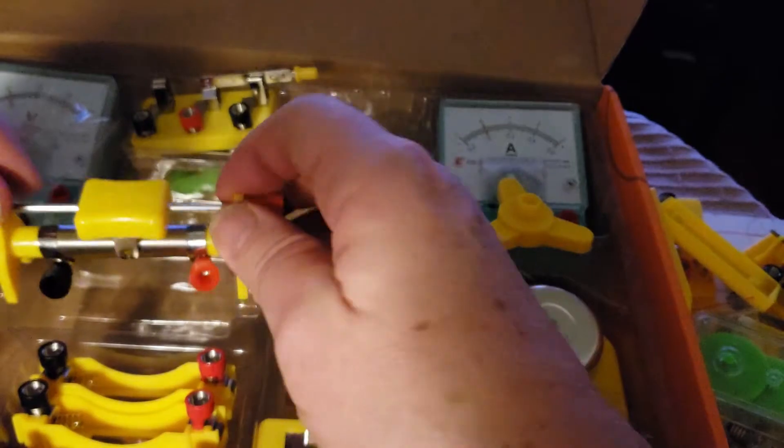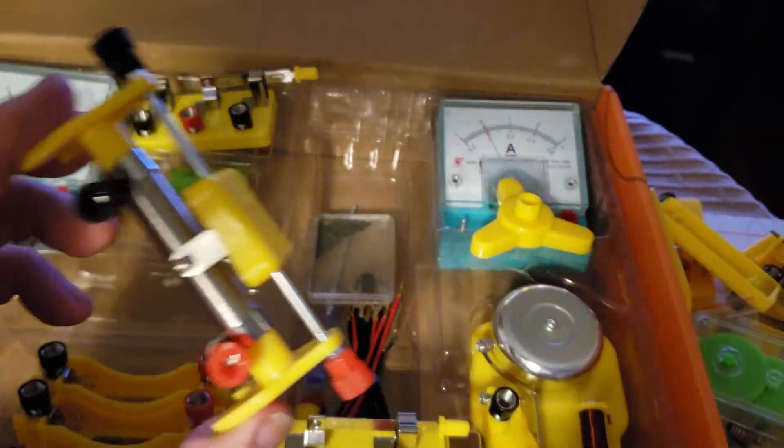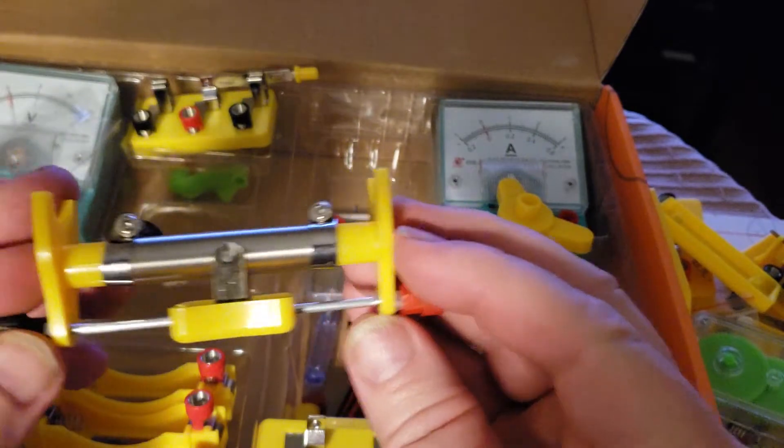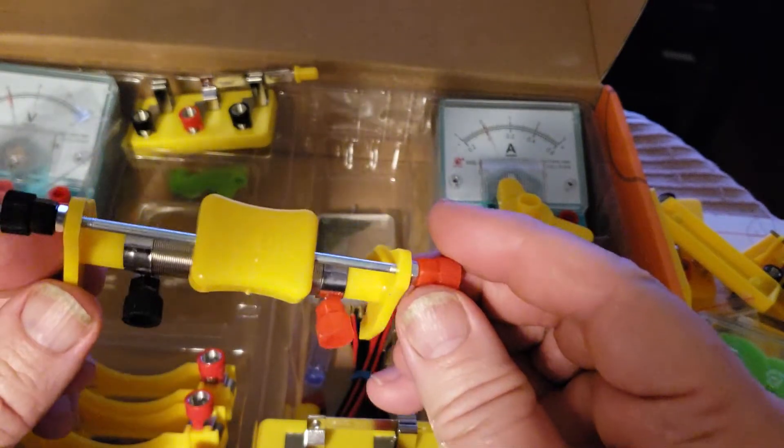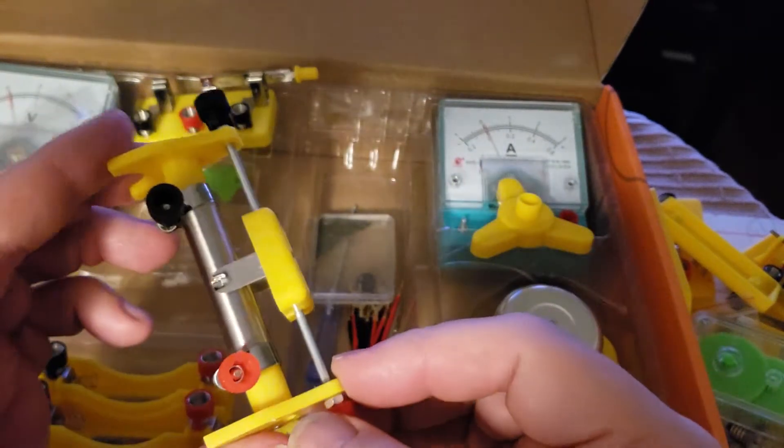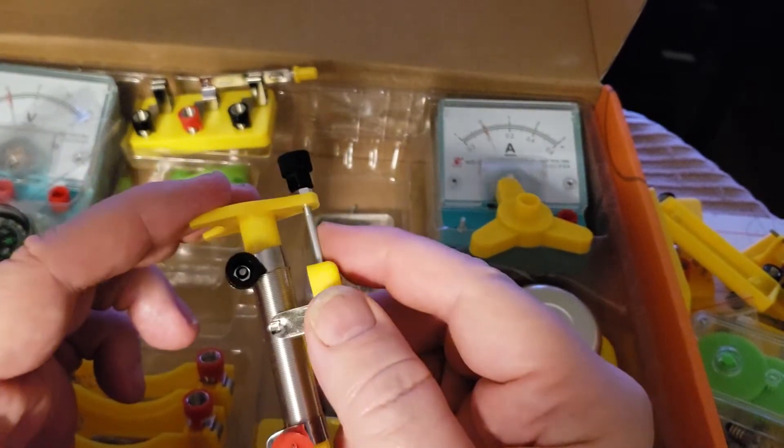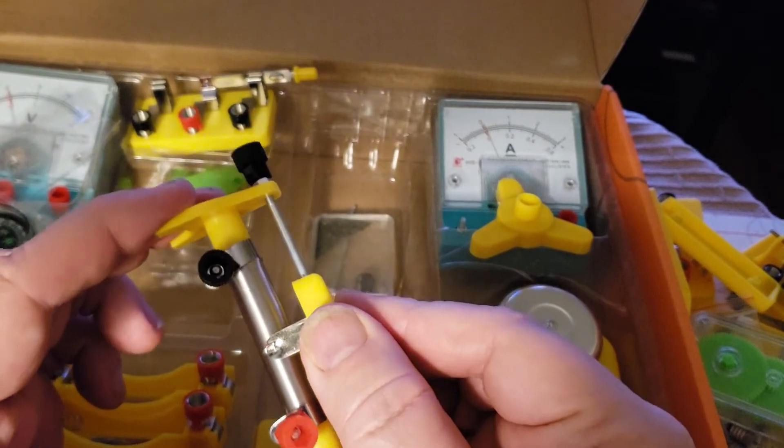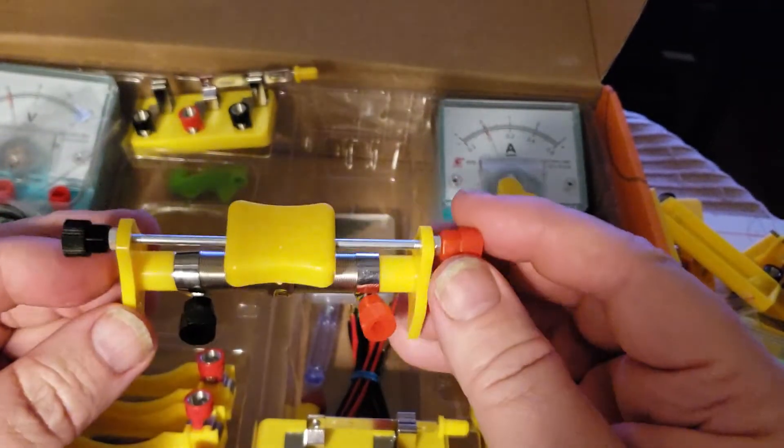This is gonna need a rheostat, which is a wire wound resistor. And we used to use these in physics 101. I remember, they're big ones from, I forget the name of the company.